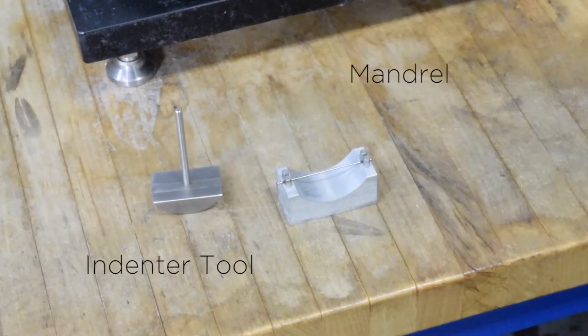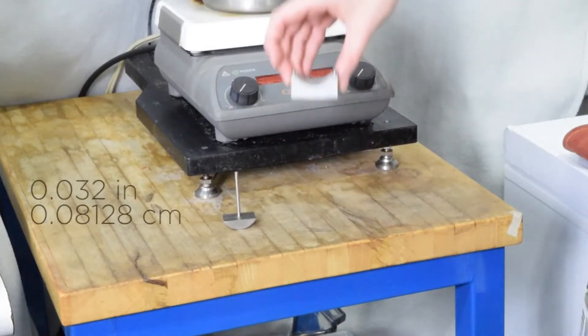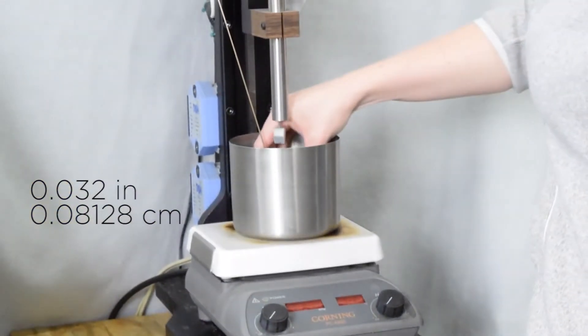For this test, you will need to use the mandrel designated for your specific wire size. We are using 0.032 inch diameter super elastic nitinol.